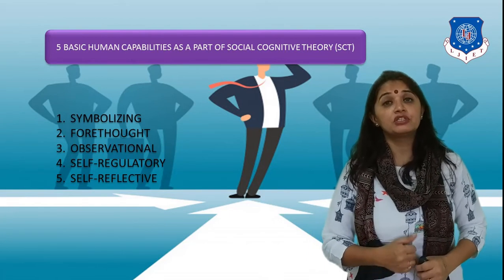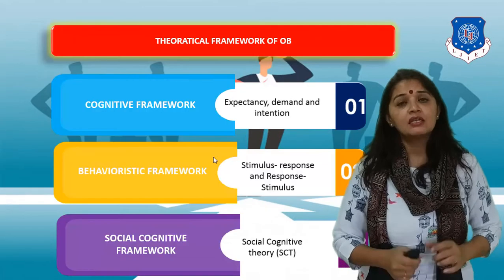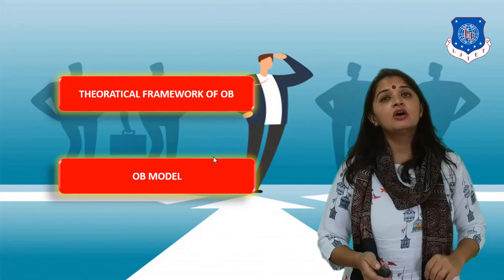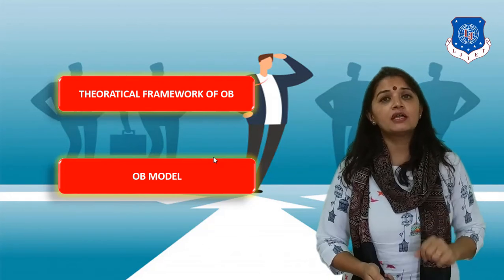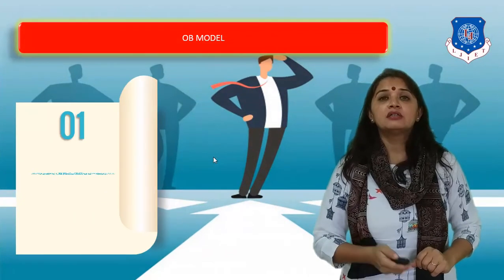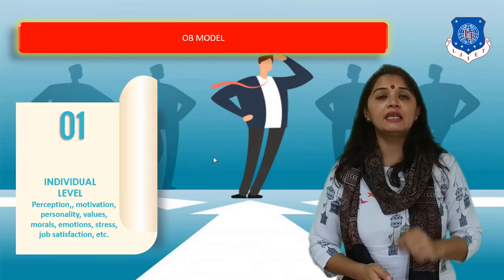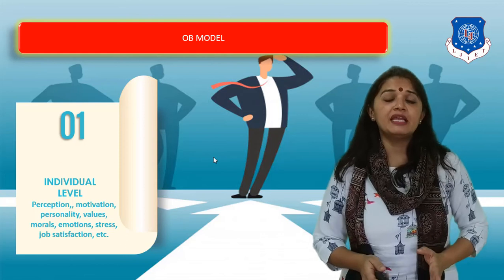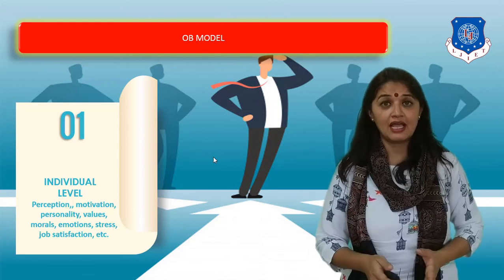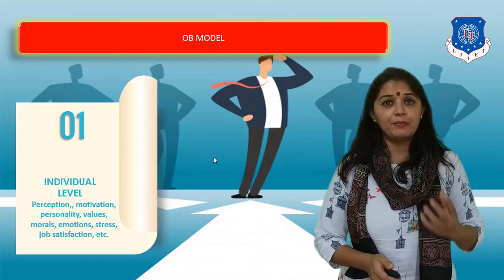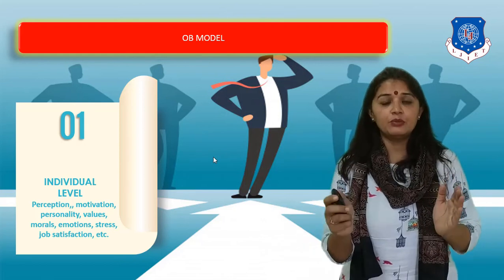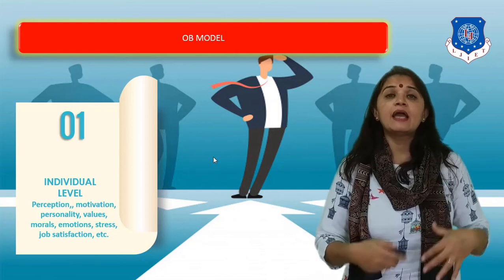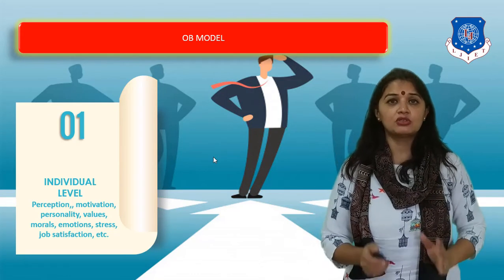These are the three theoretical frameworks of organizational behavior. Now we will be studying organizational behavior on three levels, which will define our OB model. The OB model can be divided into three different levels. The first level is the individual level. Here we talk about only individuals — every individual has a unique personality, values, and attributes, and because of that every individual behaves in a certain manner in a given situation. The individual is taken as a separate independent unit, and we will be taking many concepts from psychology because it talks about the human mind itself.